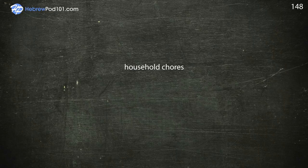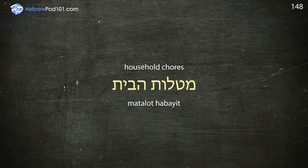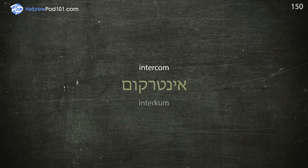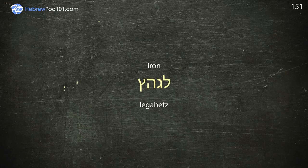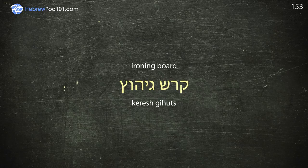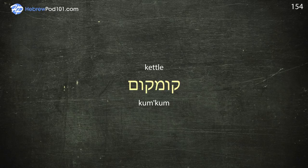Household chores — Matalot Habayt. Install — That Kin. Intercom. Iron — Tzinoor. Key — Mopteach.